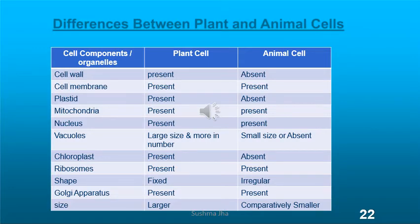Now let us see the differences between plant and animal cells. Cell wall: present in plant cell, absent in animal cell. Cell membrane: present in both. Plastids: present only in plant cell, absent in animal cell. Mitochondria: present in both. Nucleus: present in both. Vacuoles: large and more in number in plant cells because plants absorb more water; in animal cells they are very small or absent. Chloroplast: present in plant cell, absent in animal cell. Ribosome: present in both. Shape: fixed in plant cell due to cell wall, irregular in animal cell. Golgi apparatus: present in both. Size: plant cells are larger, animal cells are smaller.